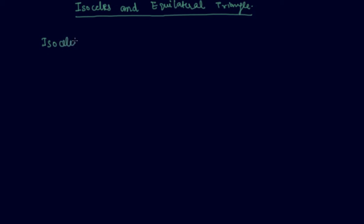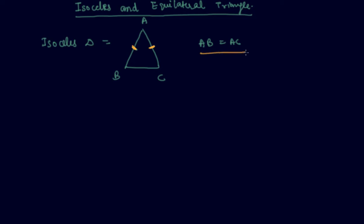What are isosceles triangles? An isosceles triangle is a triangle in which two sides are equal. You can say if AB equals AC — as you can see from the diagram, if these two sides are equal — then this triangle is an isosceles triangle.